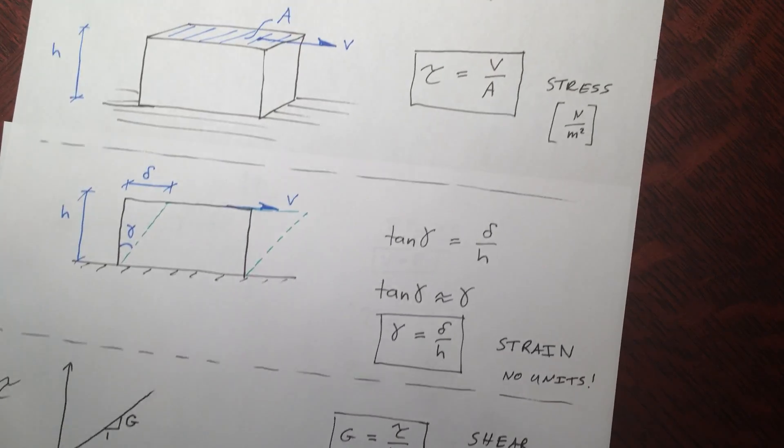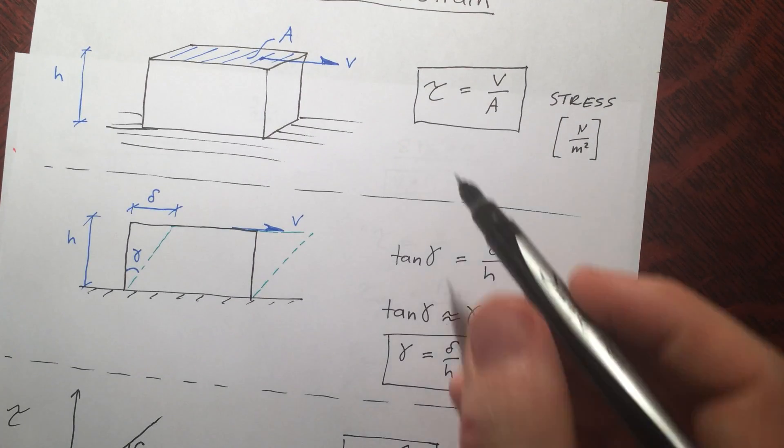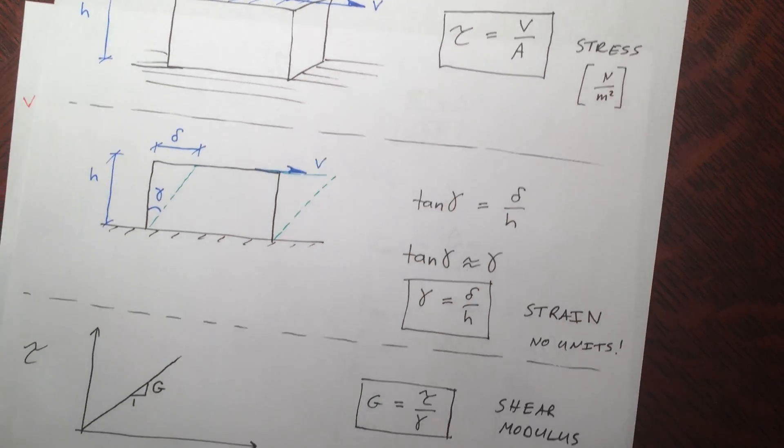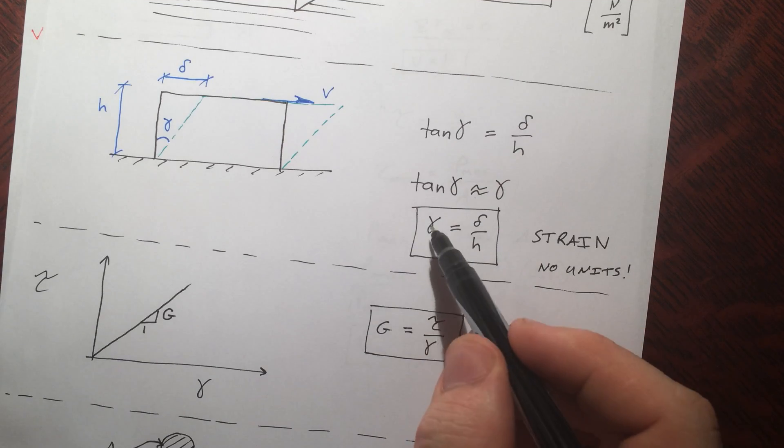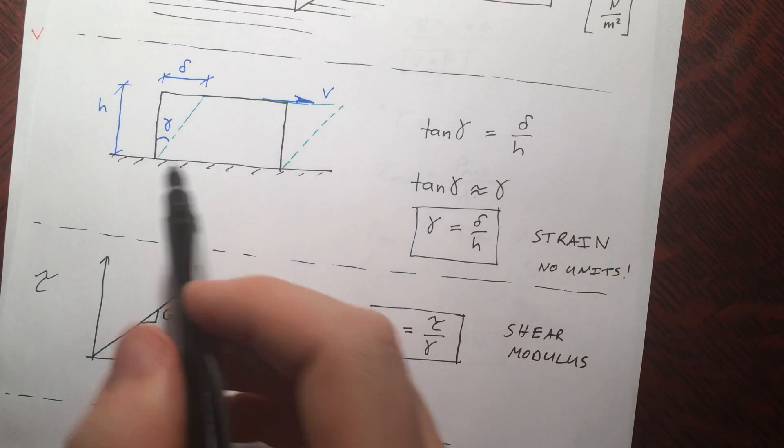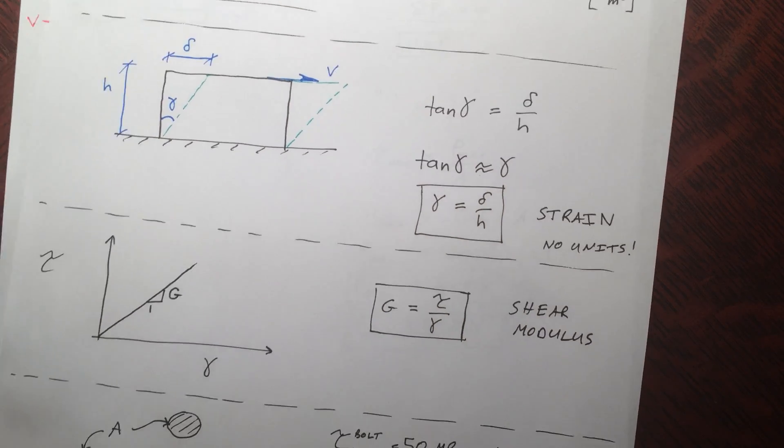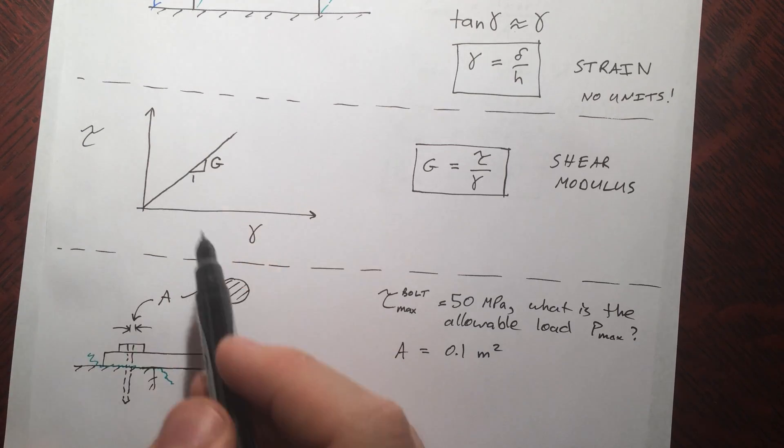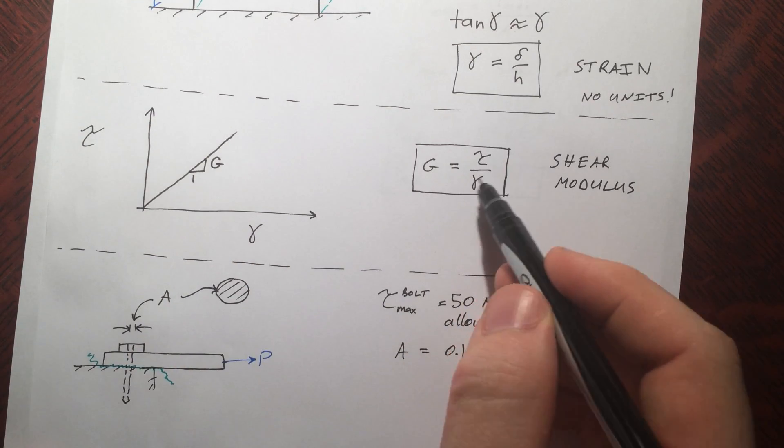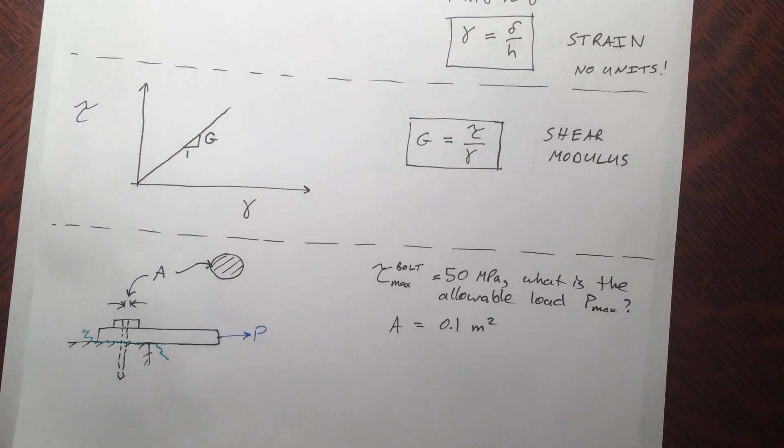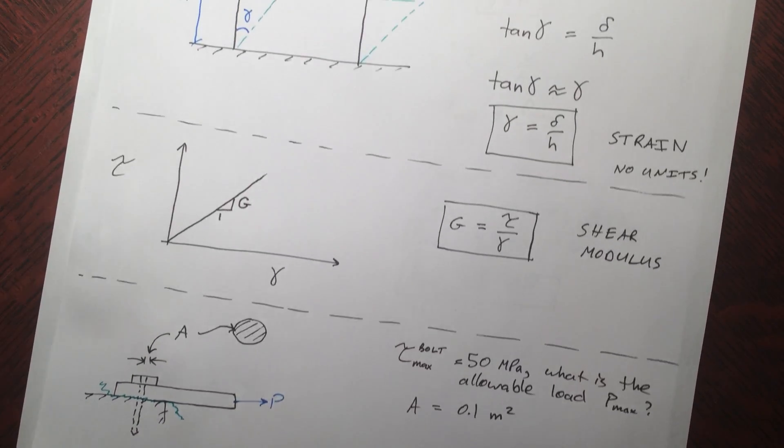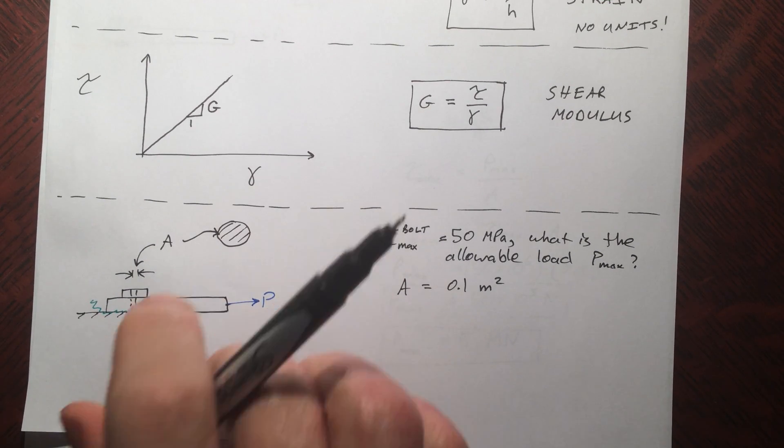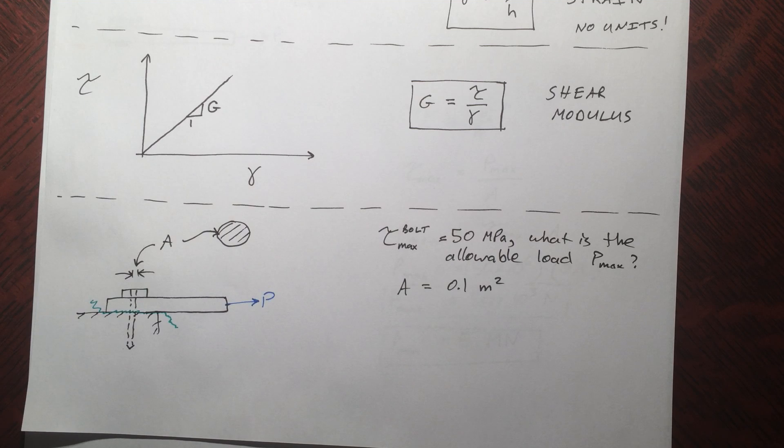Just to recap: we define shear stress to be the applied shear force over the area, the shear strain is an angle which is defined for small angles as delta over h, we define a shear modulus by plotting shear stress versus strain as G equals tau over gamma, and we went through a quick example solving for shear stress in bolts. Thanks so much for watching guys, I'll see you in the next video where we will start axial bars.